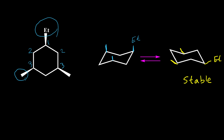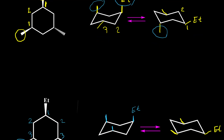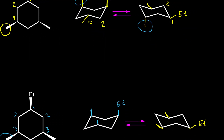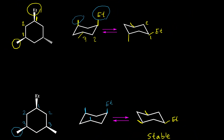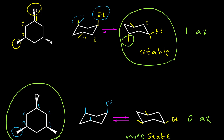All groups are on equatorial position. Now I'd like to compare the stability of these two isomers — this last example versus the previous one — to find which molecule is more stable overall. Comparing the most stable conformers of each: in this molecule we have one group on axial position, while in this molecule we have zero groups on axial position. So the second molecule is more stable, and in general this molecule is more stable than its isomer.